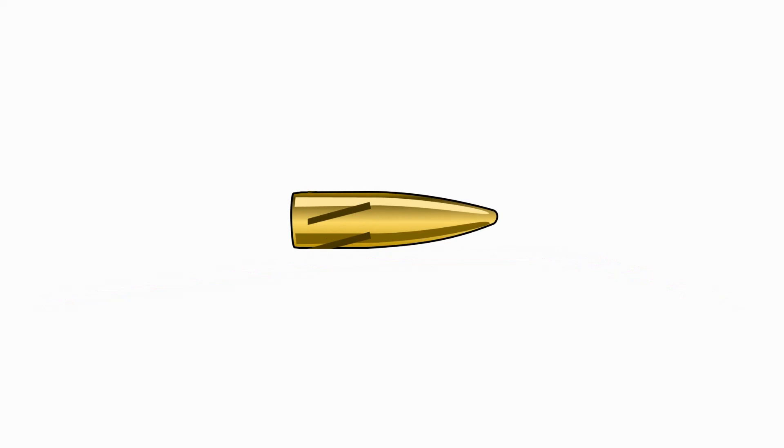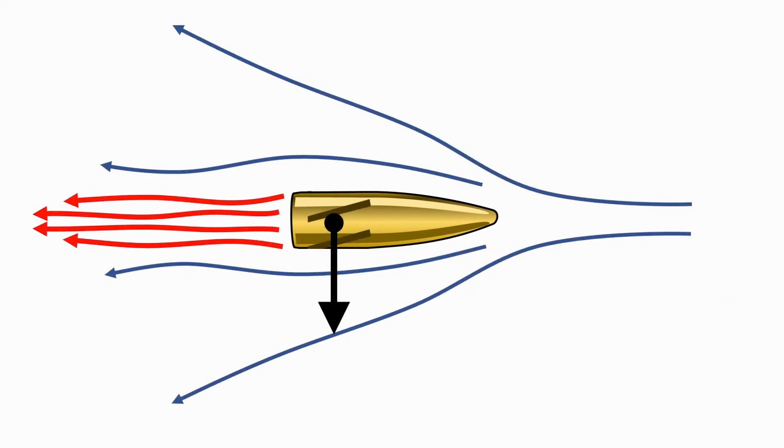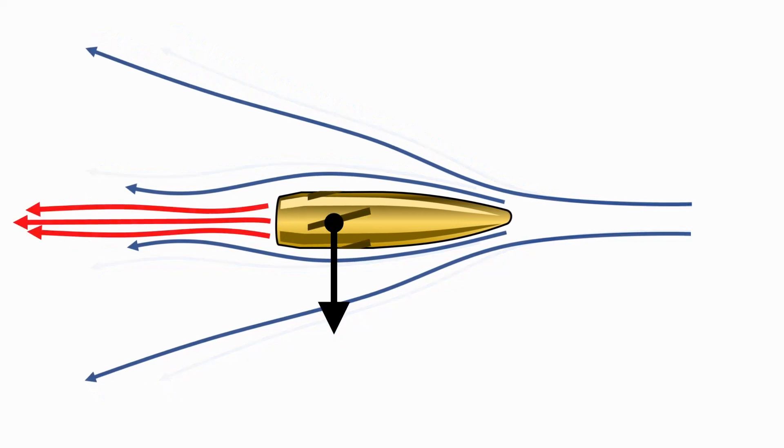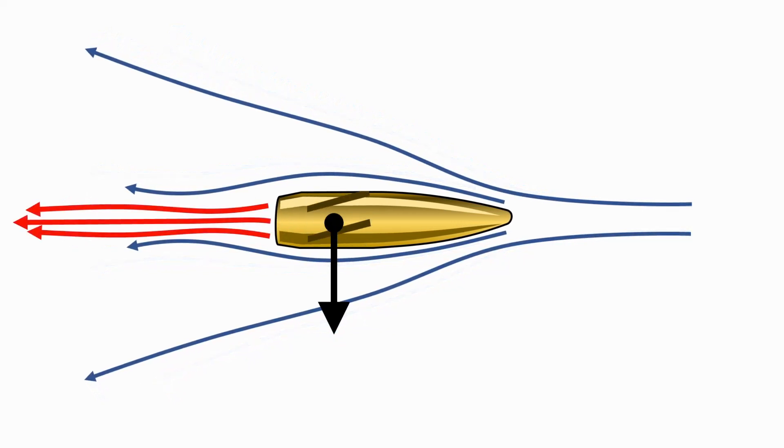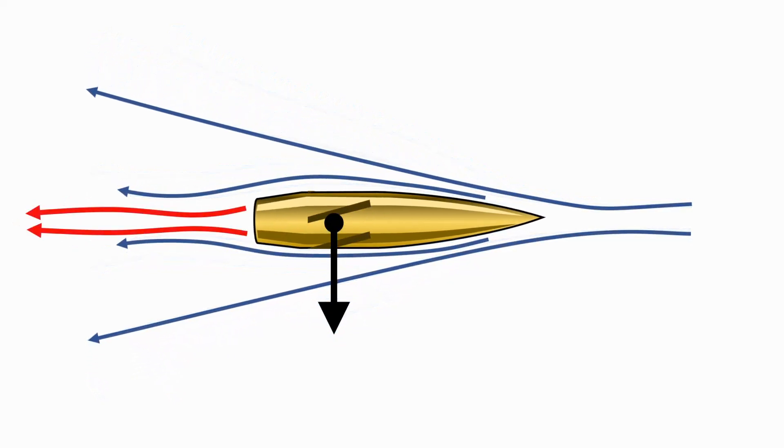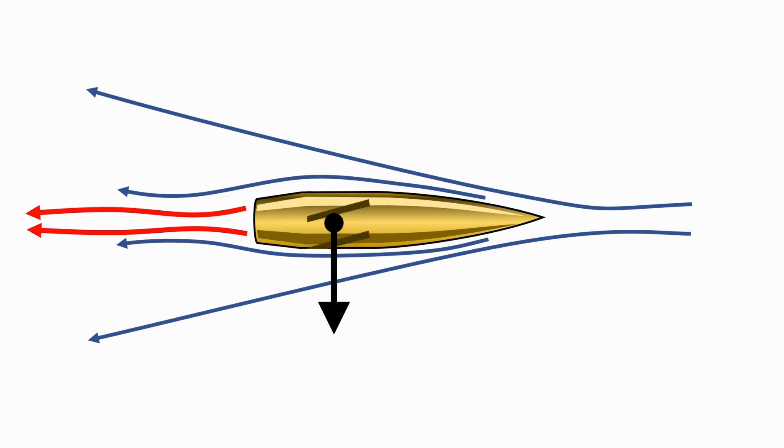In long range shooting, the shooter uses extremely aerodynamic bullets. It's referred to as high ballistic coefficient bullet or high BC. Usually long, sharp, heavy, and fast bullets with a boat tail have higher ballistic coefficient.